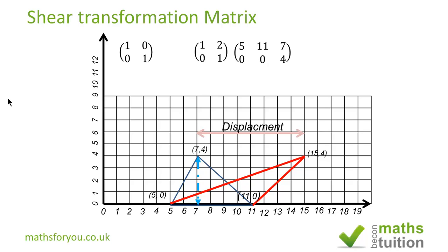Doing the matrix multiplication, the point (5,0) remains at (5,0) because 1×5=5, 2×0=0, giving 5+0=5. The same applies to (11,0). For the (7,4) vertex: 1×7=7, 2×4=8, and 8+7=15. So the transformation matrix has confirmed what we got in our triangle.